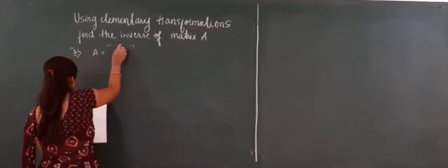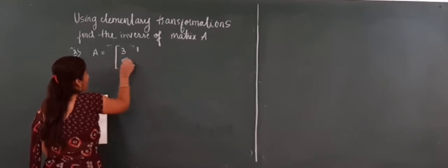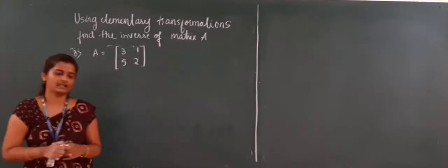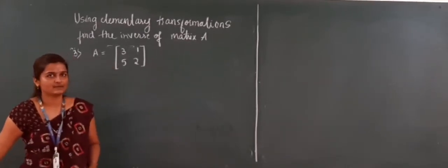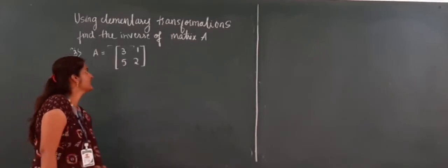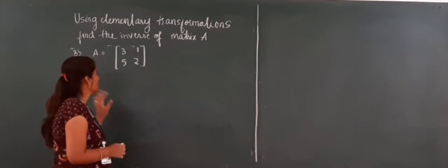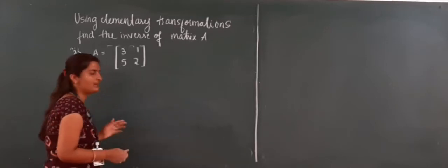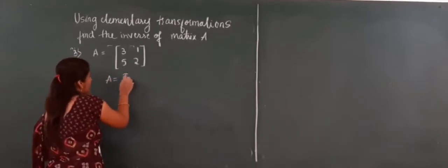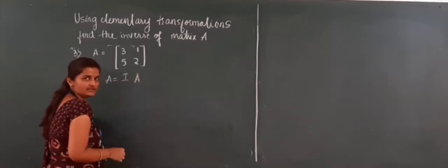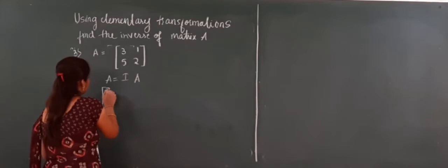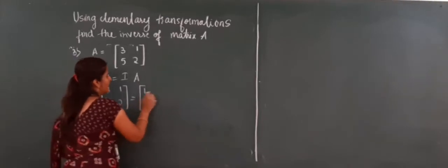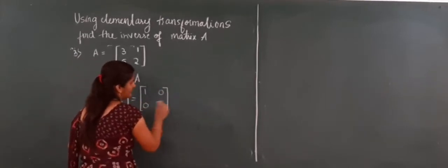That is problem three. A equals the matrix: 3, 1, 5, 2. Similarly as the last problem, using elementary transformation find the inverse of matrix A. The first step is to write A equals I times A. So I write A as: 3, 1, 5, 2. Then I write the identity matrix I: 1, 0, 0, 1. Then A on the right side.